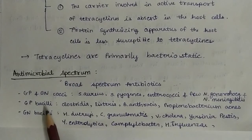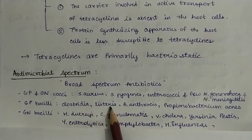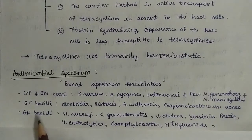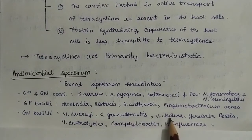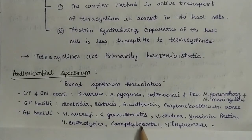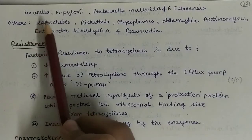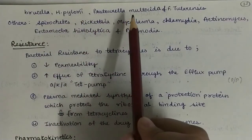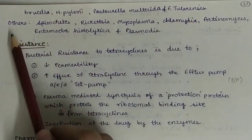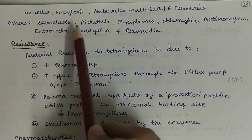Gram-positive bacilli such as Clostridia, Listeria, B. anthracis, Propionibacterium acnes, and gram-negative bacilli like H. ducreyi, C. granulomatis, Vibrio cholerae, Yersinia pestis, Y. enterocolitica, Campylobacter jejuni, H. influenzae, Brucella, H. pylori, Pasteurella multocida, and F. tularensis.